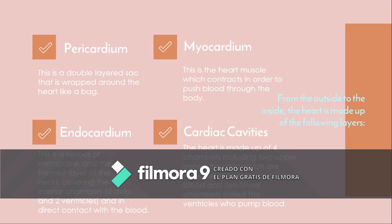The heart is protected by the ribs and the sternum. From the outside to the inside, the heart is made up of the following layers. First, the pericardium, a double-layer sac that is wrapped around the heart. Second, the myocardium, which is the heart muscle that contracts in order to push blood through the body. Then we have the endocardium, a series of membranes that are the innermost layer of the heart, covering the four interior chambers — two atria and two ventricles — and in direct contact with blood.